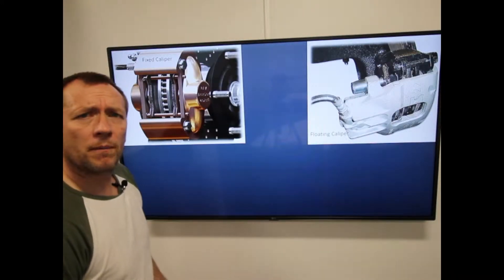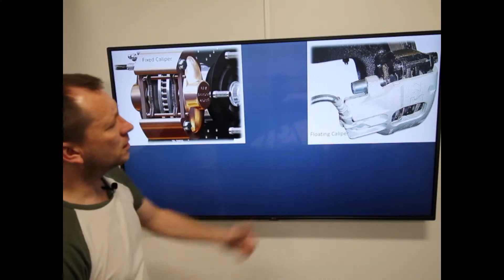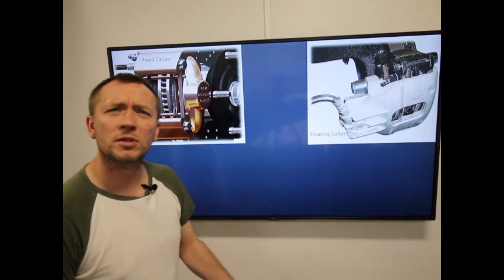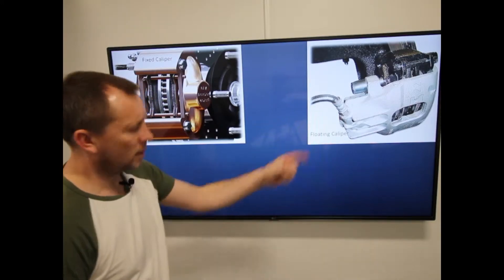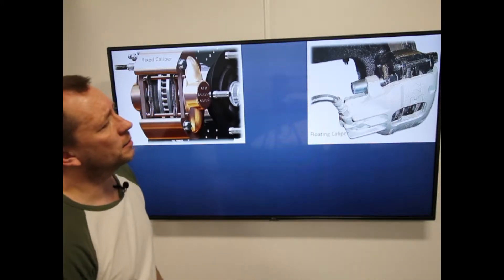So brake calipers can be put into two groups, fixed and floating. There's loads of similarities in how they function and how they operate, so let's start off with our floating caliper.